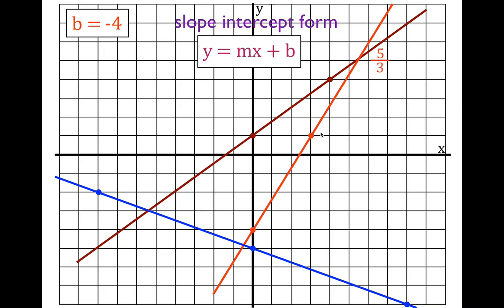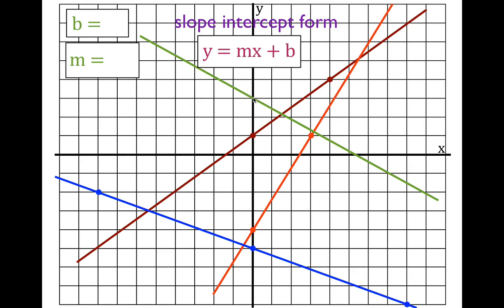The next line — you should recognize this is a negative slope. Write down b equals, write down m equals. This line crosses the y-axis at positive three. Looking for the next grid crossing, we go down four and over seven. Down is negative, so the slope is minus four over seven — minus four-sevenths. Therefore the equation of that line is y equals minus four-sevenths x plus three.